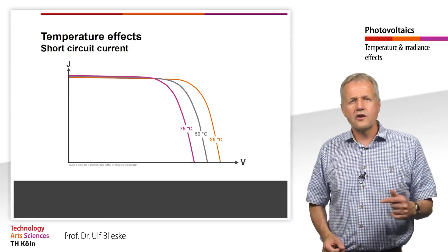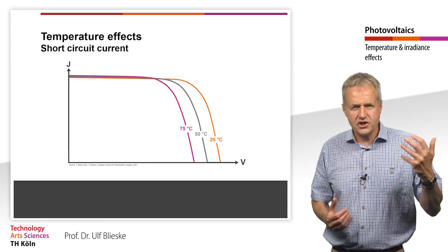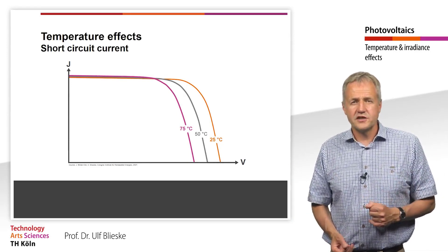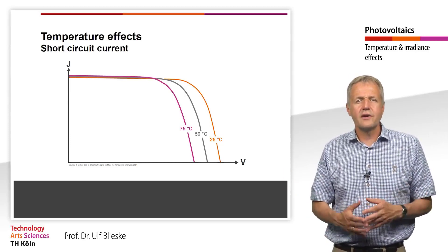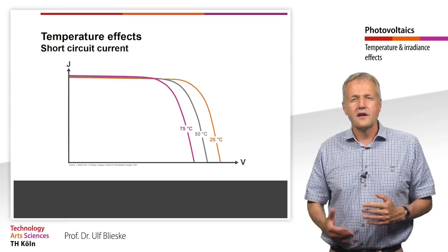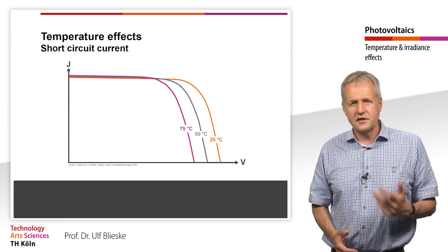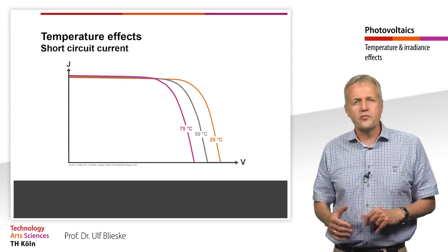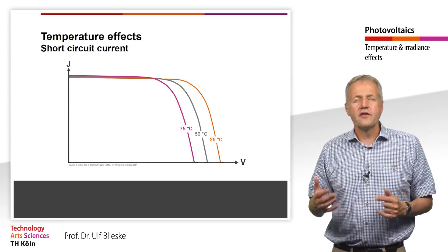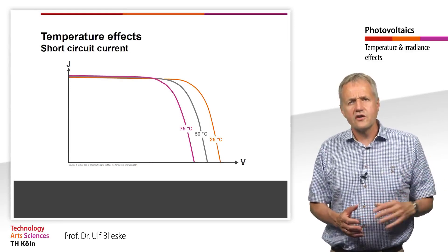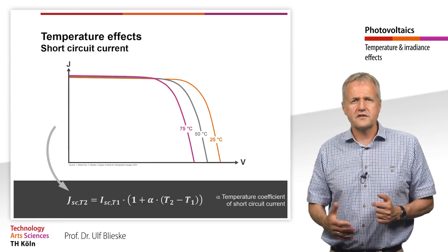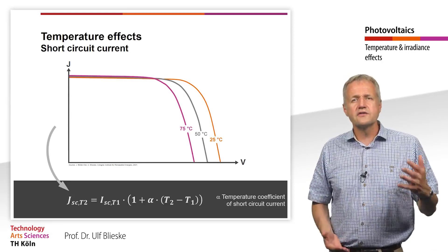The dependence of the short-circuit current on temperature is described by the temperature coefficient alpha. For a crystalline silicon solar cell, alpha is usually related to the short-circuit current at STC conditions — that means at 1000 W per square meter and 25°C cell temperature — and is given in percent per Kelvin. Typical values of alpha in silicon are 0.05% per Kelvin. The short-circuit current at any other temperature can be calculated using the corresponding formula. Note that the temperature coefficient alpha applies only to the short-circuit current.